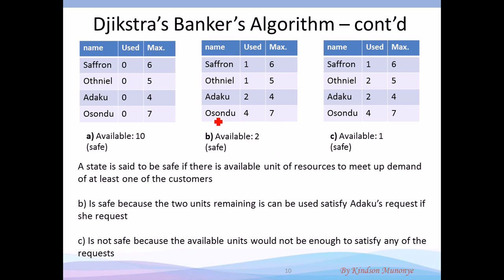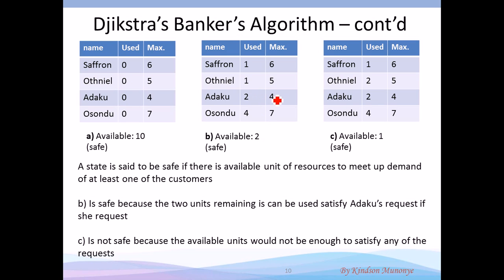In the middle of a transaction, all of them have acquired certain resources but can acquire more before reaching their maximum. Saffron has one item and needs five more to reach its maximum. If Saffron or Othniel requires more resources there might be a problem because only two are available. But this state is safe because Adaco has two and needs two more to reach its maximum — the two available resources can be provided to Adaco. It reaches its maximum, completes its task, and releases all resources. Then four resources become available to service Osando or Othniel. It's safe because this request can be satisfied.